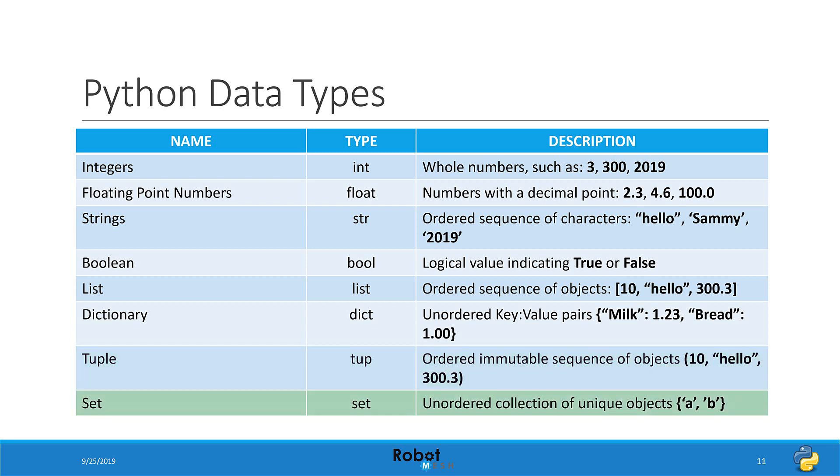And lastly, we have sets, which are an unordered collection of unique objects. They function a little bit like a dictionary, but without the key-value pair. So those are the basic data types. Again, don't worry if you didn't understand any of it. We'll be seeing plenty of examples in future videos.